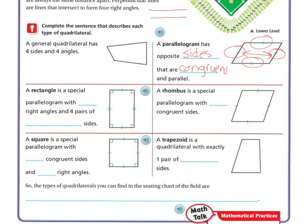Now, a rectangle is a special parallelogram with four right angles. So here's one, two, three, four. Remember, a right angle is 90 degrees from yesterday. And four pairs of perpendicular sides. Because see how these two are congruent and then these two are congruent and they are perpendicular to each other.